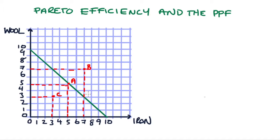So here on the screen I have a production possibility frontier. In this economy we can make wool or iron and I have indicated three points on the graph. There is one point C which is to the left of the frontier, there's another point A which lies on the frontier, and there's a third point B which lies to the right of the frontier.